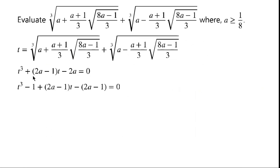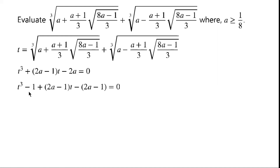Now we consider factorizing the equation. Here we have 2a minus 1, and here we have minus 2a. If we add 1 to the left hand side of the equation, we can write minus 2a minus 1. We can see that the two terms have a common factor, 2a minus 1. We also add minus 1 to the left hand side of the equation, giving us t cubed minus 1.